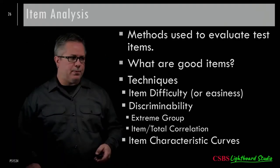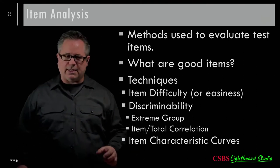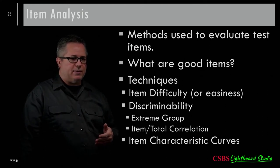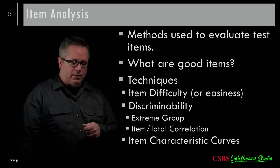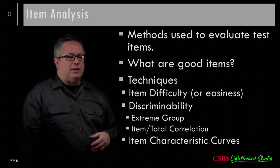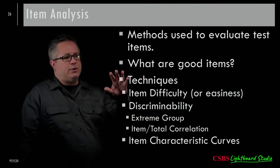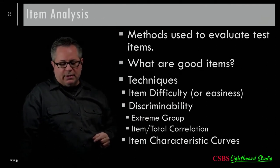In factor models — exploratory or confirmatory — we often ignore item difficulty, which is odd because it's a big part of testing. Test banks from textbooks will often rate how difficult items are and mix easy and hard questions. Sophisticated scantron machines can tell you how many people answered a question correctly, how much the item relates to the total score — all part of item analysis.